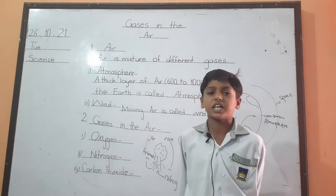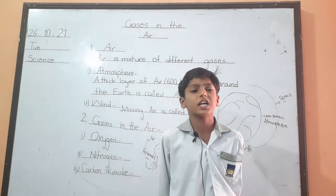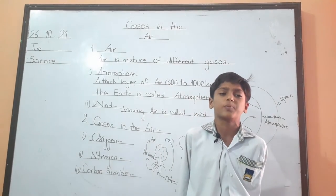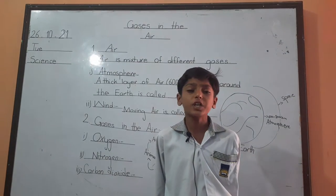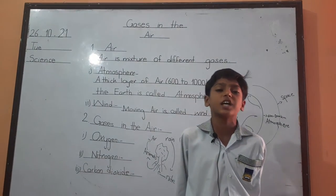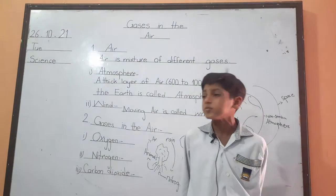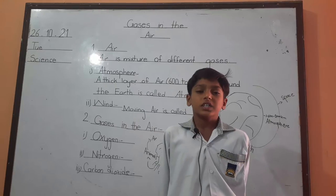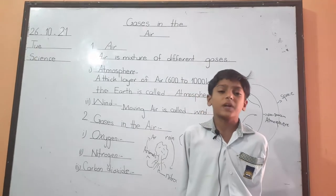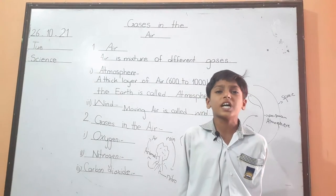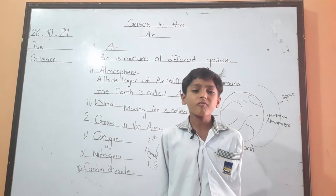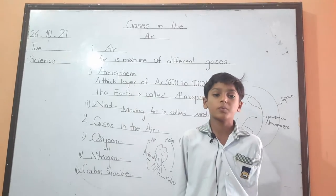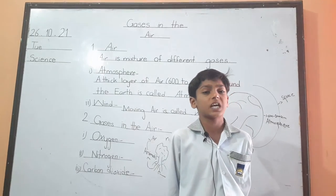Carbon dioxide is very important to green plants. It is present less than 1% in the air. In sunlight, plants use carbon dioxide and water to make their food.